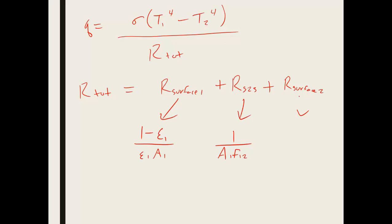And then we also have 1 minus epsilon 2 divided by epsilon 2 times a2. So now these are all resistances in series.